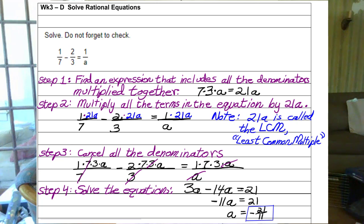Step 1. Find an expression that includes all the denominators multiplied together. We need an expression with 7 times 3 times a in it. 21a. Guess what? That's our least common multiple. Multiply all the terms, one-seventh, negative two-thirds, and one over a. Multiply all the terms in the equation by 21a. When you're multiplying a fraction by 21a, you put it up in the numerator. So I'll have 1 times 21a over 7 minus 2 times 21a over 3 equals 1 times 21a over a.